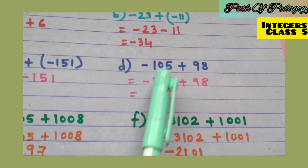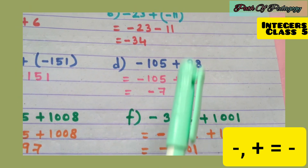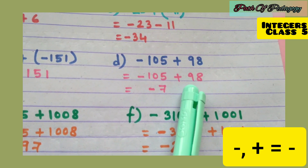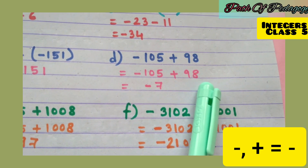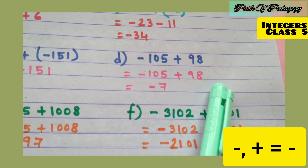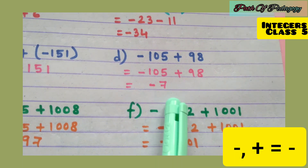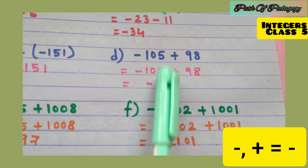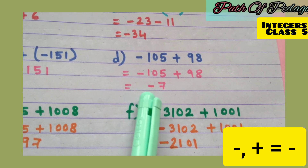Question d: −105 + 98. Minus plus is always minus, so we subtract: 105 − 98 = 7. The bigger number is 105 and its sign is minus, so the answer is −7.